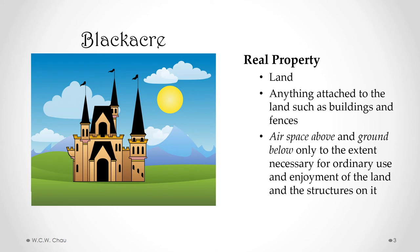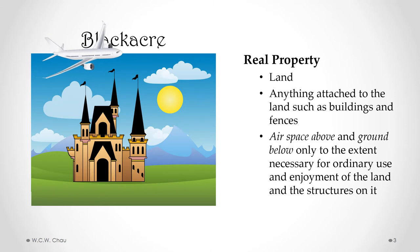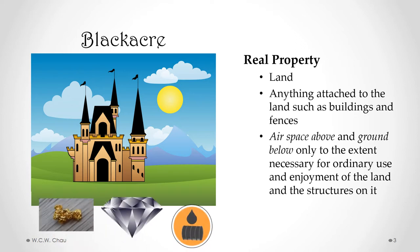Real property also includes a certain amount of airspace above and a certain amount of ground below, but only to the extent necessary for the ordinary use and enjoyment of the land and the structures on it. So you can't stop an airplane from flying over your house, because that airspace does not belong to you. And because you don't own all of the ground below, minerals like gold, diamonds, oil, or gas are not included in real property — so if there are valuable things like that beneath property you own, you don't own them.